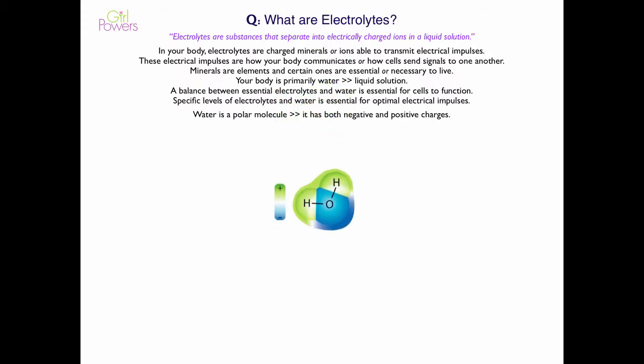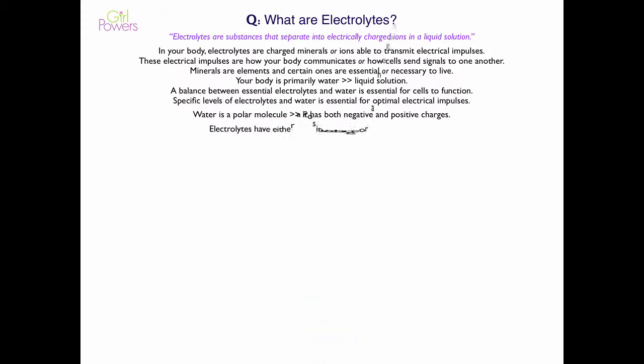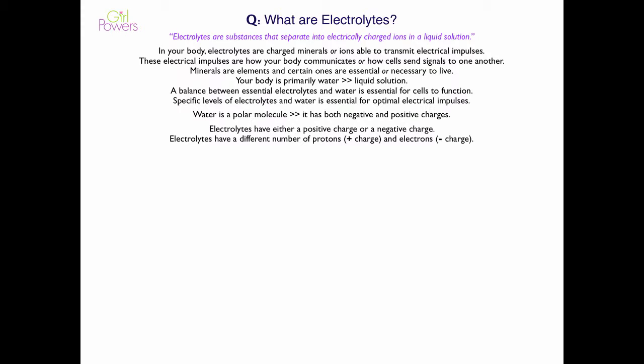Water is a polar molecule — it has both negative and positive charges, like a battery. Electrolytes have either a positive charge or a negative charge based on their composition. They have a different number of protons, which have a positive charge, and electrons, which have a negative charge. And depending on which one they have more of, that's how they get classified.